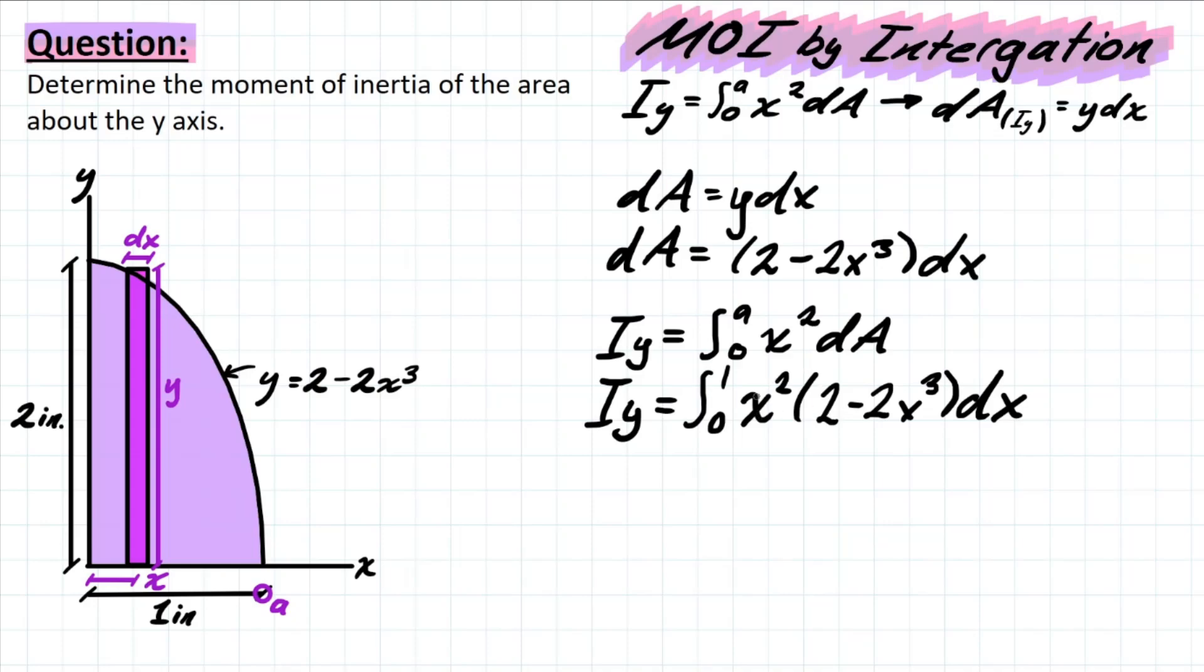So we can proceed by just distributing this x squared into this 2 minus 2x to the power of 3, and then integrate as normal. All right, now that's all distributed. Let's go ahead and integrate. We know the rule. This x is going to be plus 1, and we're going to bring that 2 plus 1 to the bottom. So this is going to be 2 over 3 on the bottom times x to the 3. And then same thing for this as well. We have x to the 5 right now. That's going to turn to a 6. That 6 comes down as the denominator, and that is the integration for the simple exponents.